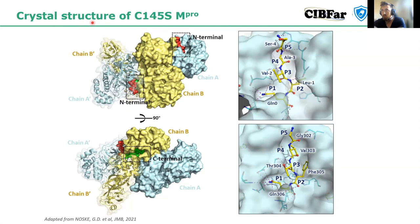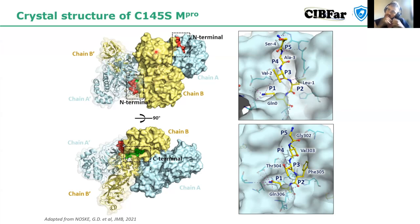In the crystal structure of the C145S main protease, we also saw something really curious. The tetramer was actually two copies of dimers processing the C-terminal of one another. This is the observation of what we call a trans event — the C-terminal was being processed by another copy of the protein.